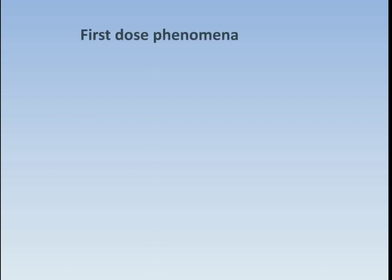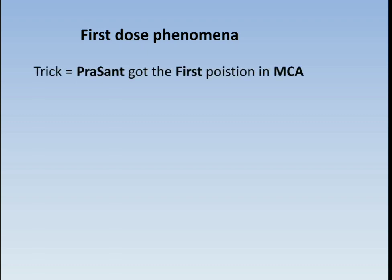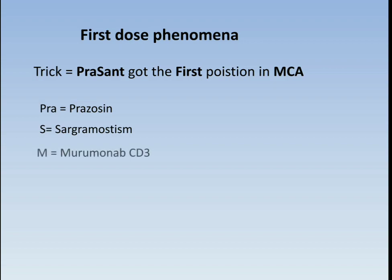The drug which shows first dose phenomena — the trick is 'Prashant got the first position in MCA.' Here 'first' denotes first dose phenomena; P denotes prazosin, SA denotes sargramostim, M denotes muromonab-CD3, and C denotes captopril, which is an ACE inhibitor.